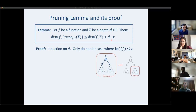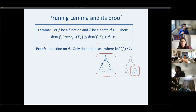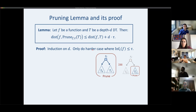We prove this by induction on D. The base case when D equals zero is trivial — no pruning occurs, so the bound holds with equality. The inductive case has two sub-cases: when you prune and when you don't. I'll focus on the harder case where the root has small influence and must be pruned.